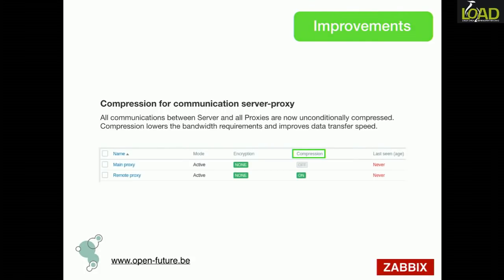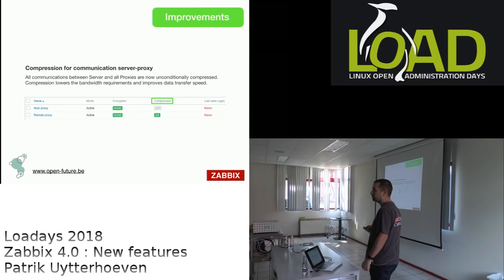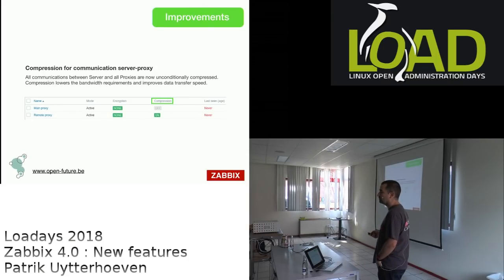Protocol-level compression has been added between the Zabbix server and proxy. Combined with the existing encryption, this is especially useful on poor network links. The communication protocol has also been optimized to reduce the volume of data transmitted.